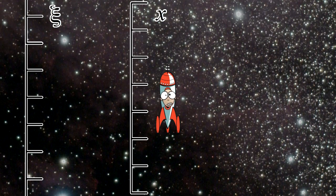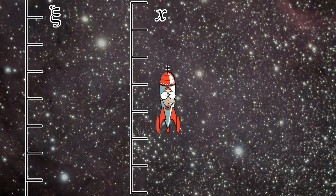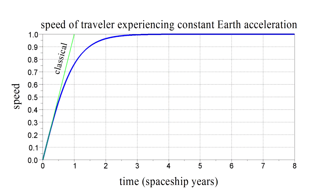Classically, with constant acceleration, our speed would increase linearly. After one year, we would be traveling the speed of light. But as already mentioned, general relativity says that our velocity will grow as the hyperbolic tangent of time, which is the blue curve. Even though our experience in the spaceship is of constant acceleration, our speed continually grows, but never reaches that of light.